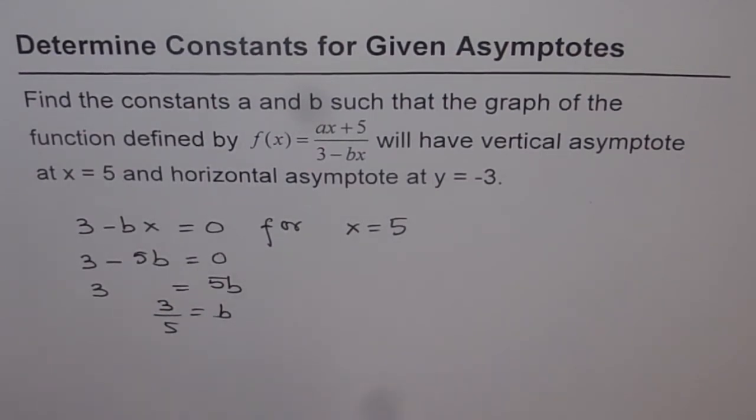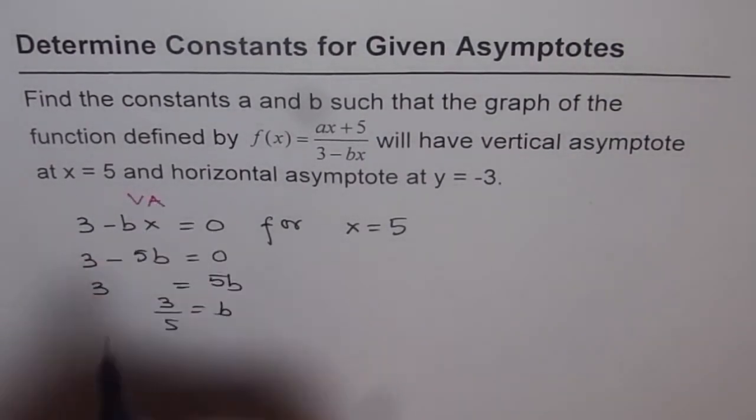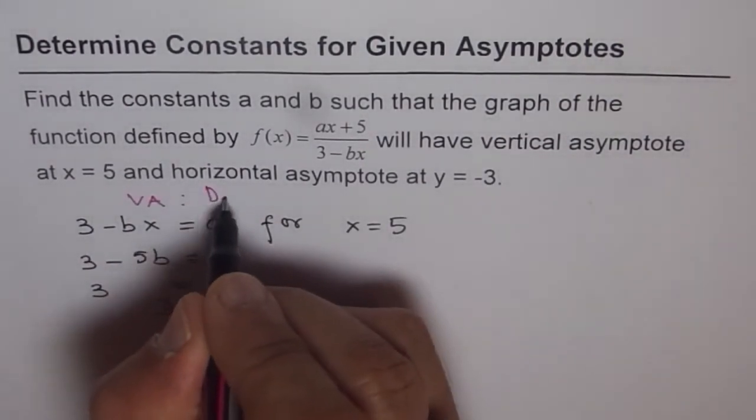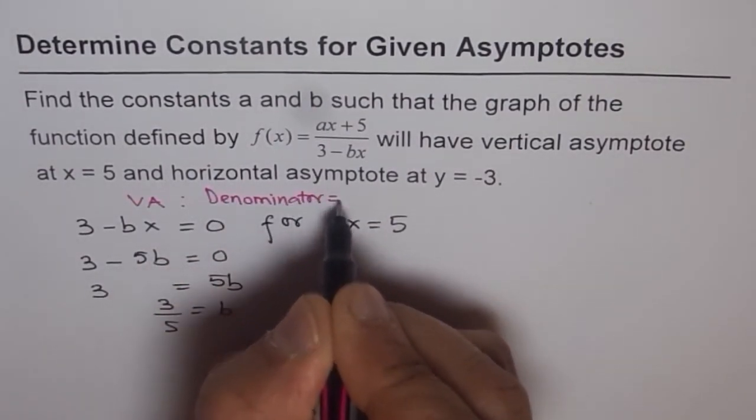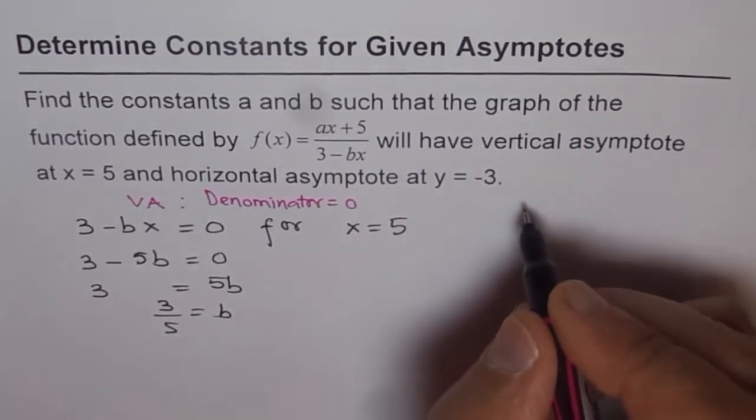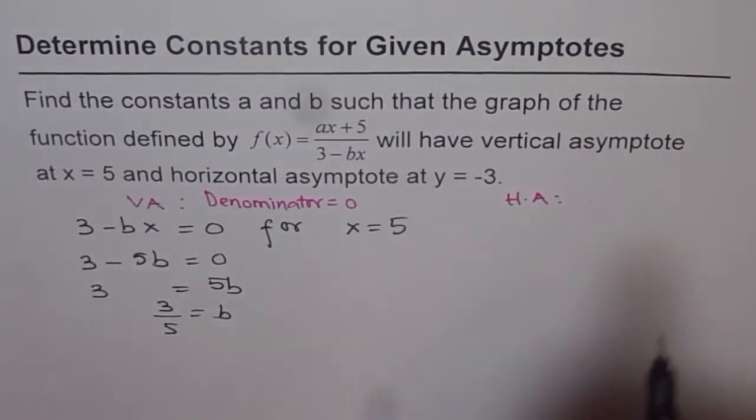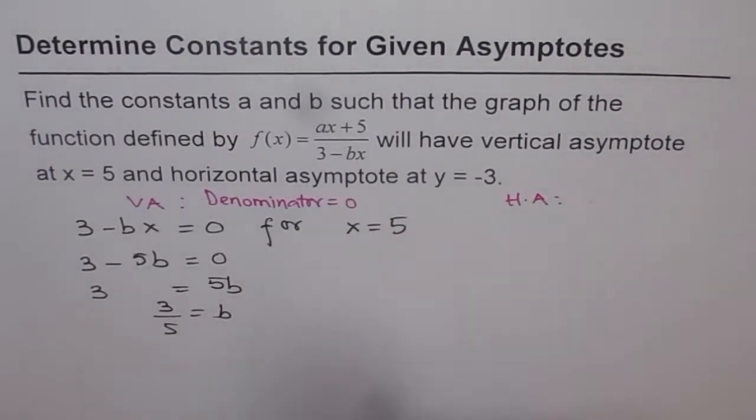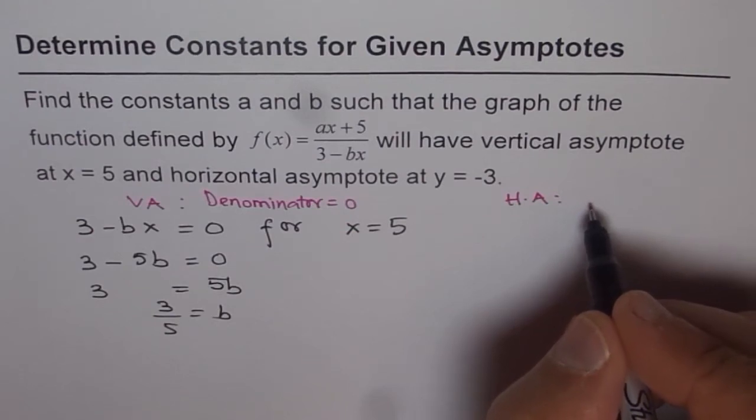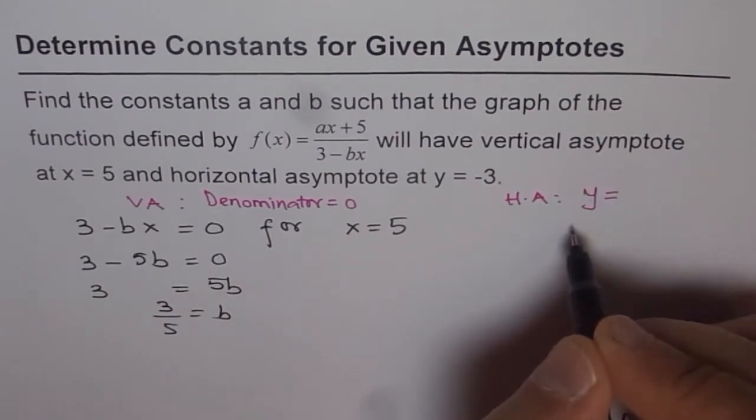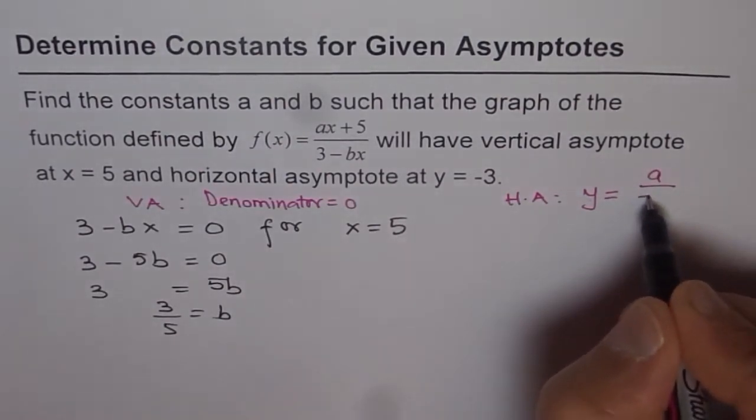Now, how about horizontal asymptote? So the condition for vertical asymptote is denominator equals 0. Now let us analyze horizontal asymptote. Horizontal asymptote, what is the condition? Since the degrees are same, then what is horizontal asymptote? Horizontal asymptote will be y equals ratio of leading coefficients which is a over minus b.